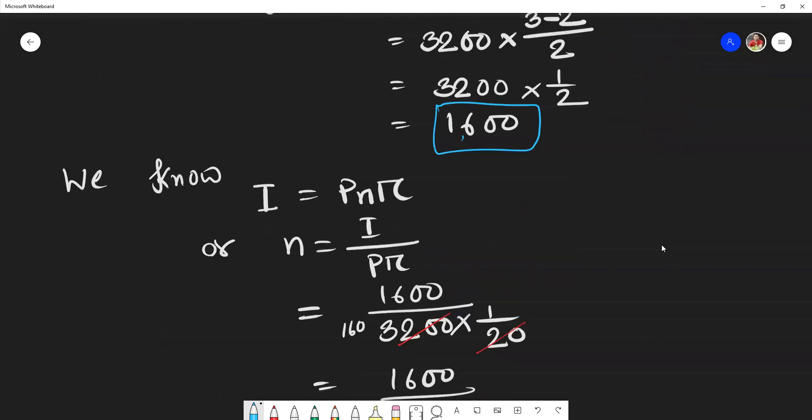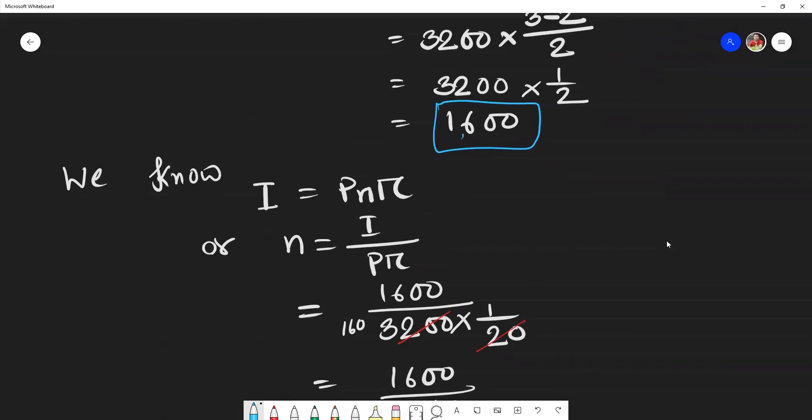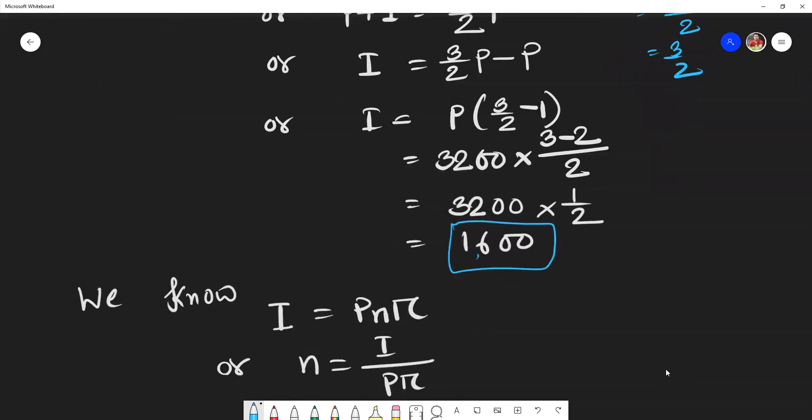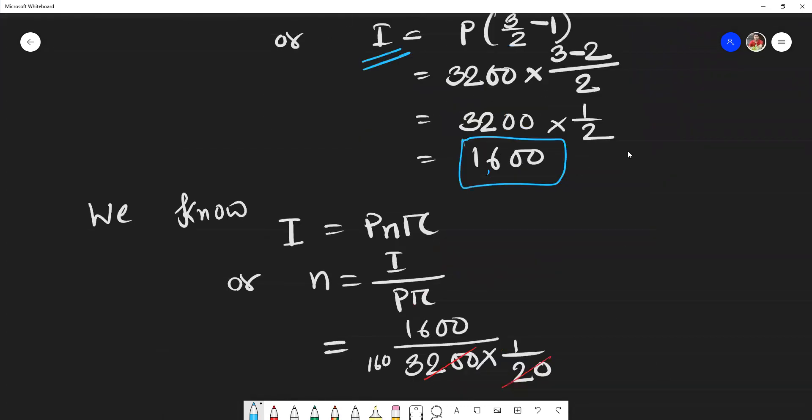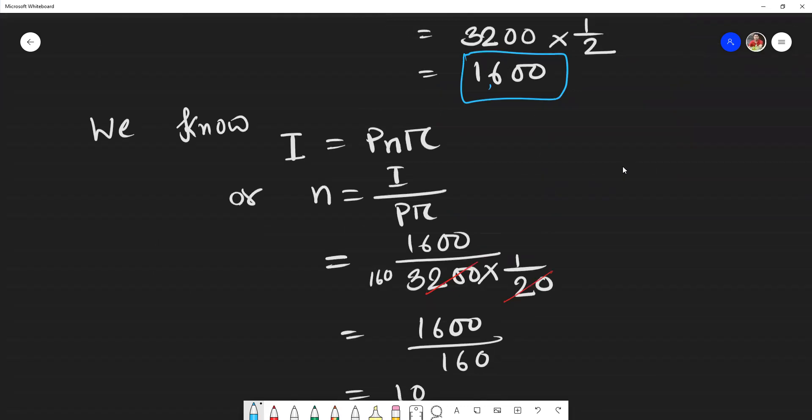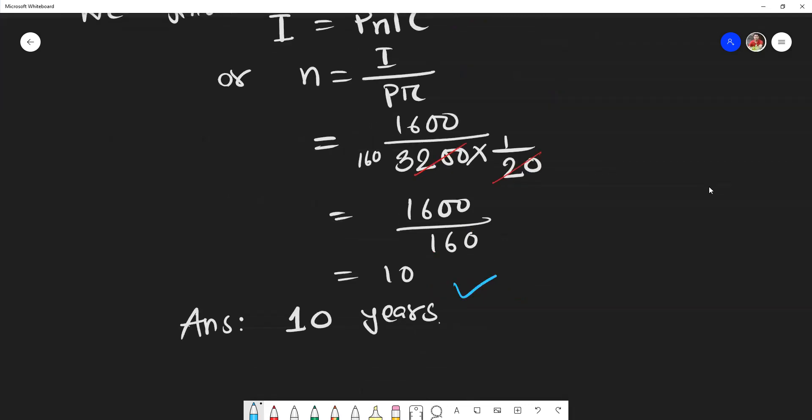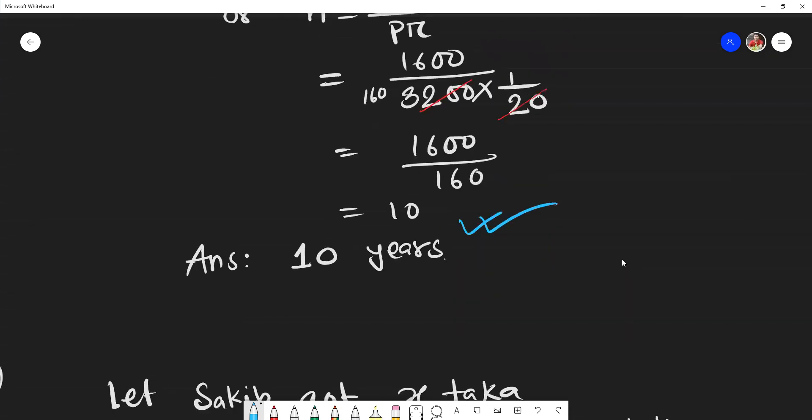According to the question, how many years? Now interest is 1,600 taka. We know simple profit I equals PnR, so n equals I divided by PR. Putting the values: I equals 1,600, P equals 3,200, R equals 1/20. After calculation we get 10 years.